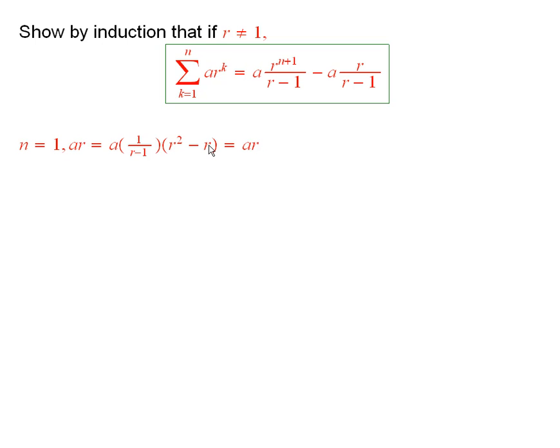I mean, r squared minus r. And now, the r squared minus r is just r times r minus 1. So, the r minus 1's cancel, and you have a times r. So, that's what this reduces to. When I just plug in n equals 1, it works. And that's the first step.